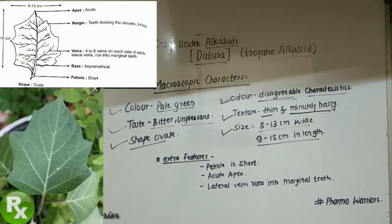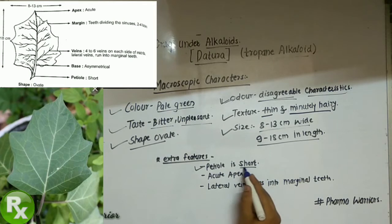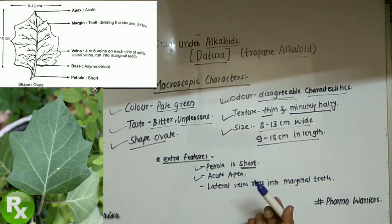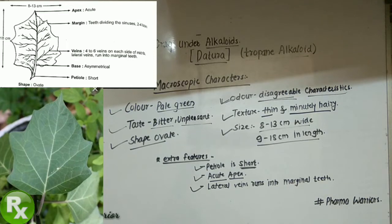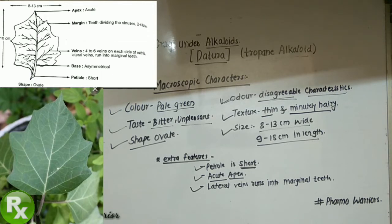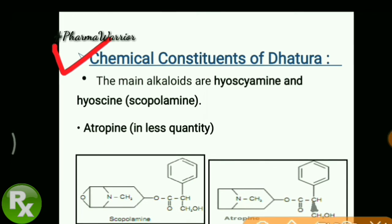Looking at the morphology in more detail: the petiole visible at the lower side is a short petiole. The apex — the upper part of the leaf as seen in the picture — is acute. The lateral veins run into the marginal teeth, which you can observe in the diagram. The base is asymmetrical, meaning the two sides of the leaf from the center are not equal in proportion.